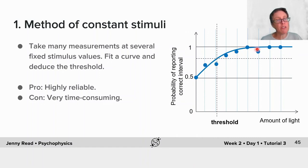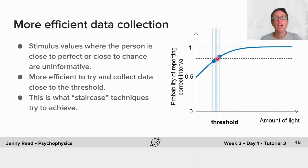It's pretty inefficient because points where the subject is close to chance or where they're perfect are pretty uninformative when you're trying to work out where their threshold is. It would clearly be better and more efficient to collect data at stimulus intensities that are close to the threshold. That's what so-called staircase techniques try to achieve.